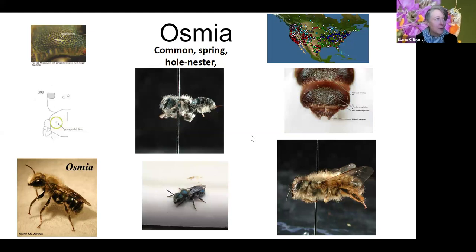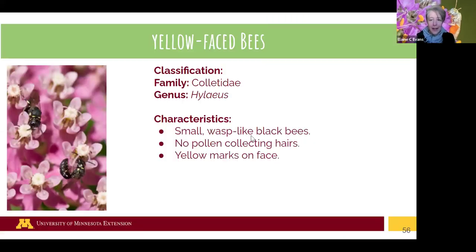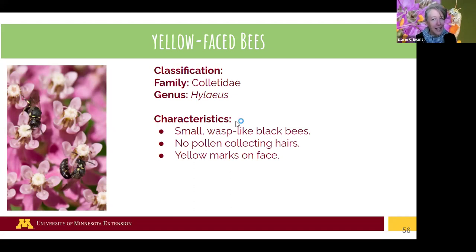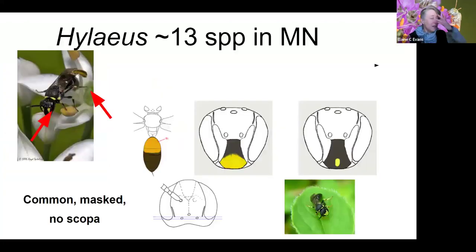Yellow-faced bees are another group that you really have to look at closely to be convinced they're a bee. They're small, somewhat wasp-like, not super hairy, and don't have many pollen-collecting hairs. They're little black bees with yellow marks on the face, fairly common especially from late spring through mid-summer. They're very diverse but very difficult to tell apart from each other — so be happy if you can just recognize that this one is a bee.